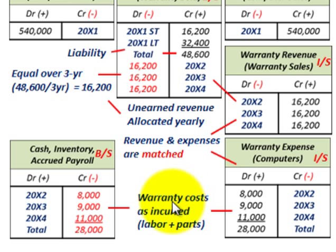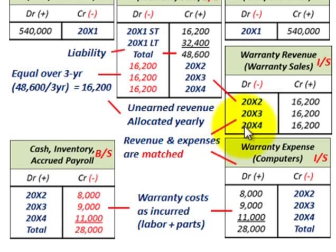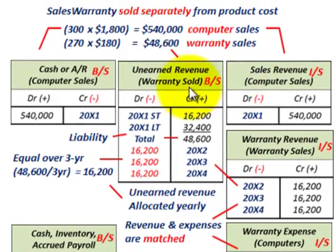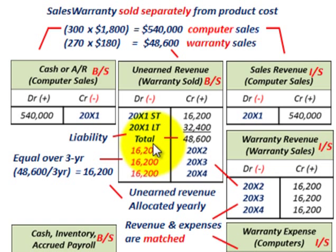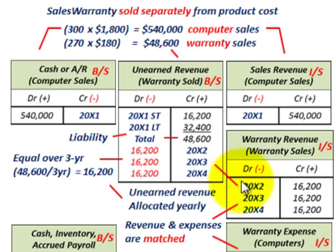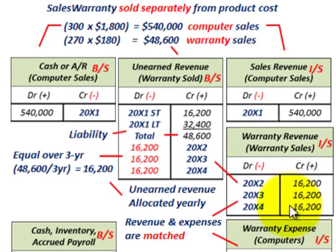This is the sales warranty approach where the warranty is sold separately from the unit cost. Our revenues and expenses are matched: computer sales revenue was recognized for the computer itself, and warranty revenues of $48,600 divided by 3 years — $16,200 per year — are matched with the warranty expenses over 20x2 through 20x4.